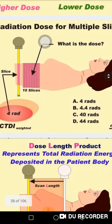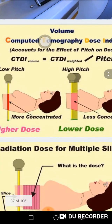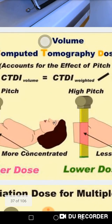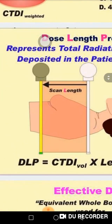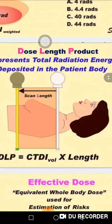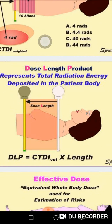Regarding CTDI volume: I calculated the dose for one slice, for a specific volume. But if I have 20 or 30 slices covering a certain scan length, I need to multiply the CTDI volume by the scan length to give something called the dose-length product (DLP). The CTDI volume covers one slice, but if you take a scan of 20, 30, or 40 centimeters, the dose will definitely differ — so a new factor, the scan length, must be introduced.